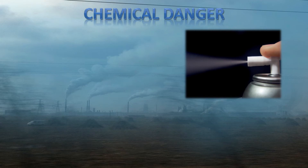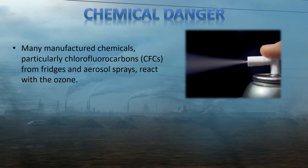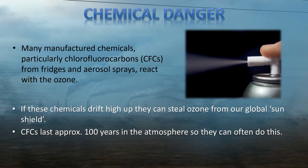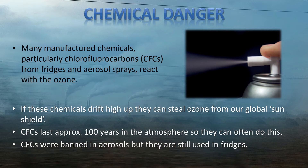There are chemical dangers to the ozone layer, however. Many manufactured chemicals, especially chlorofluorocarbons or CFCs from fridges and aerosols, react with ozone. If these chemicals are allowed to drift up to the stratosphere, they can react with the ozone and steal it from our global sunshield. CFCs last for about 100 years in the atmosphere, so there is a high chance they can drift up to the stratosphere and react with ozone. CFCs were banned in aerosols, but they are still used in fridges.